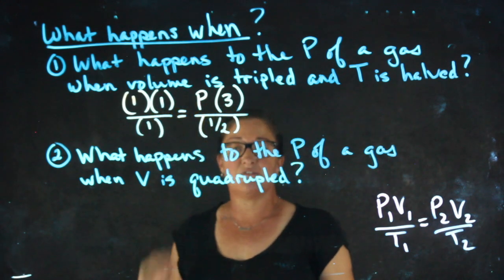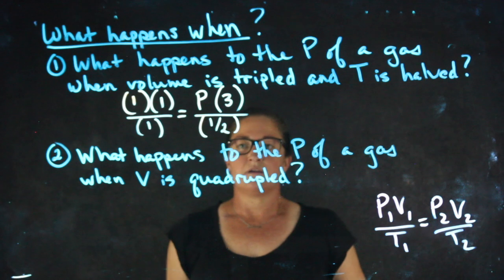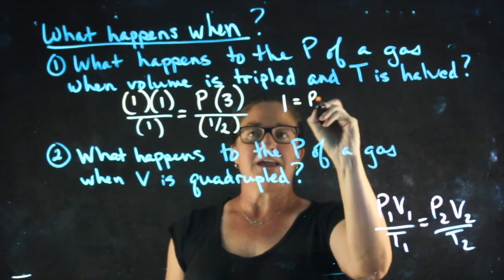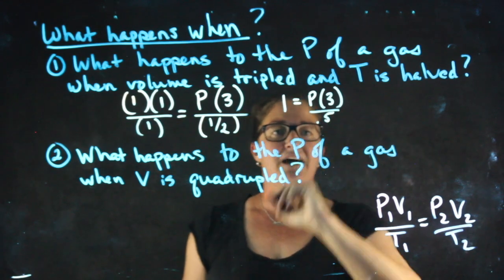Now I need to solve for P. So I'll have one equals P times three over 0.5.